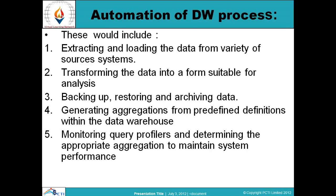Now let's talk about the automation of the data warehouse process. Automation includes extracting and loading data from a variety of source systems. Data is extracted from different sources and then loaded. The next step in the automation process involves transforming the data into a form that is suitable for analysis — converting collected data into a useful format so we can carry out analysis.